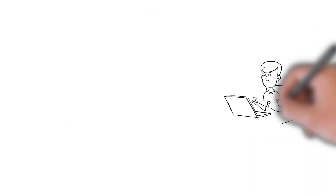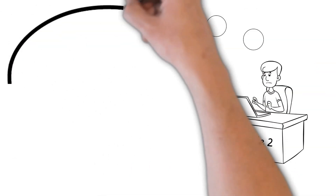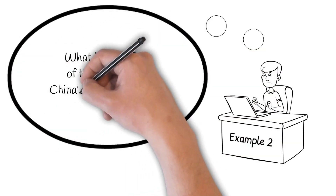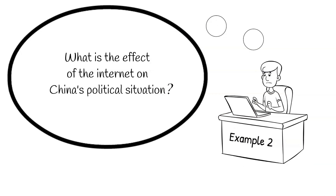Here is a second example about media and politics. The question is: 'What is the effect of the internet on China's political situation?' We can tick the boxes for relevance and interesting topic, but what does 'China's political situation' really refer to? That's pretty vague and probably far too broad. Similarly, 'the internet' can include a great many things — are we talking about the web, the mobile internet, or maybe a certain platform or app? We'll need to fix the scope. It's also an open question whether it is possible to measure and assess the kinds of effects the question asks about.